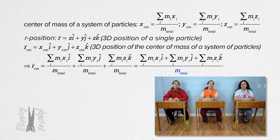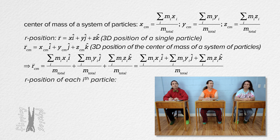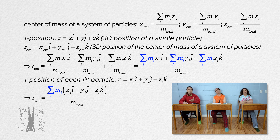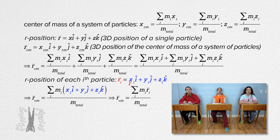And then I'm not sure. Well, we know the r position of the i-th particle is x sub i times unit vector i, plus y sub i times unit vector j, plus z sub i times unit vector k. And in the numerator, there is a common operator in each term: the sum of the mass of the i-th particle. And that means we can substitute the r position of the i-th particle into the equation, and we get the r position of the center of mass of a system of particles equals the sum of the mass of the i-th particle times the r position of the i-th particle, all divided by the total mass of the system.